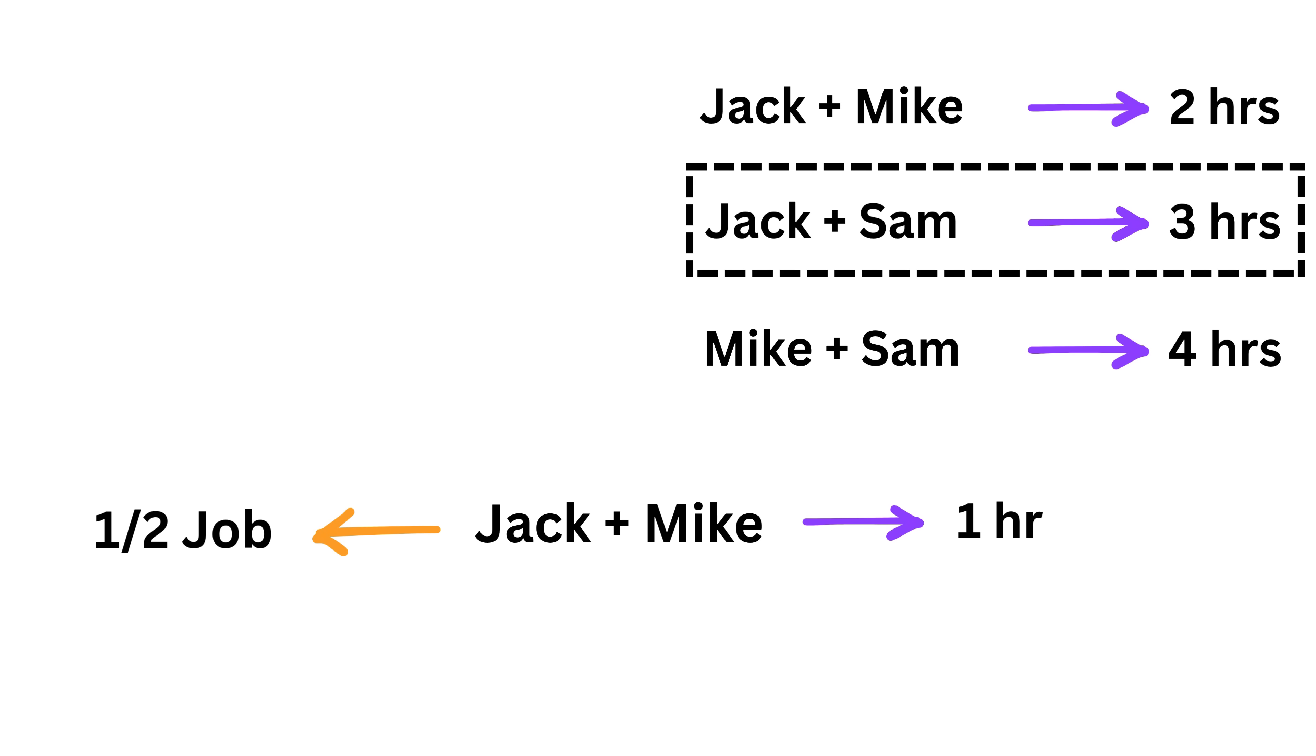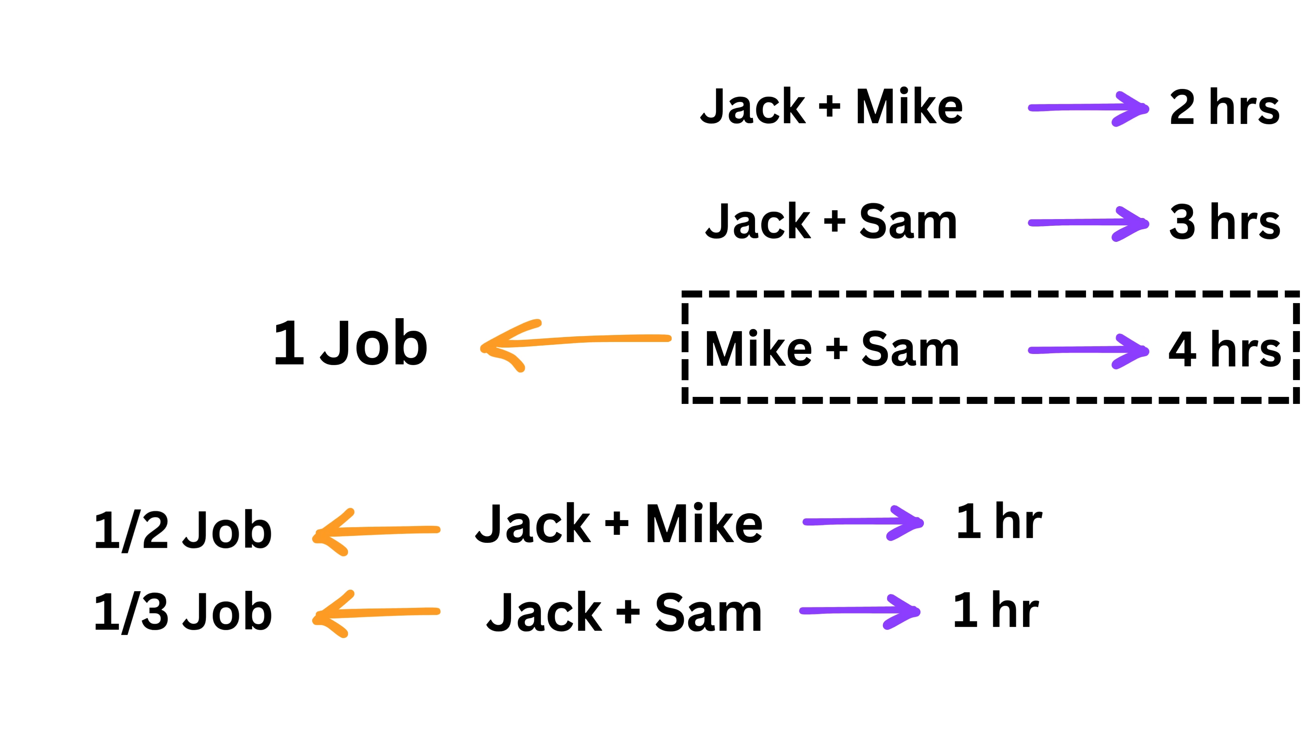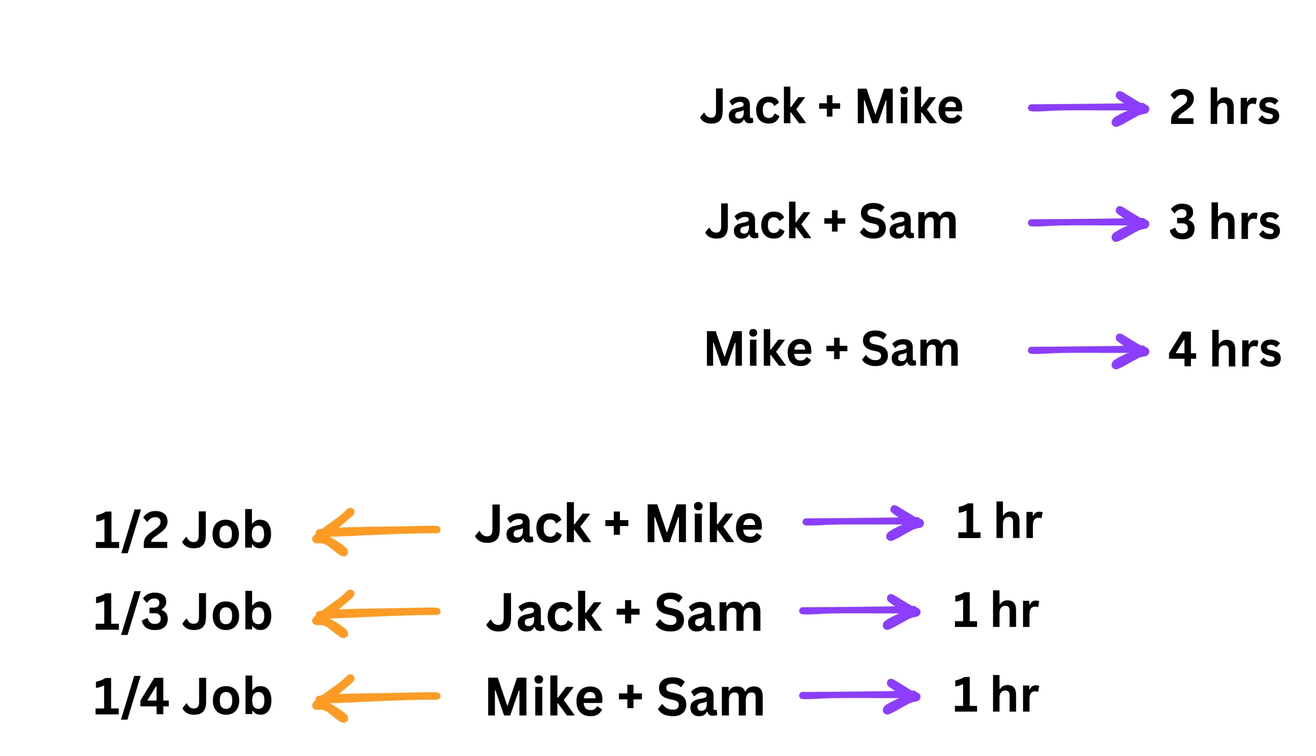Now, the same logic applies to the second line. Jack and Sam can finish the job in three hours, which means in one hour, they do one-third of the job together. And for the third line, in one hour, Mike and Sam can do one-fourth of the job together. Now we will see about how to represent this clearly.